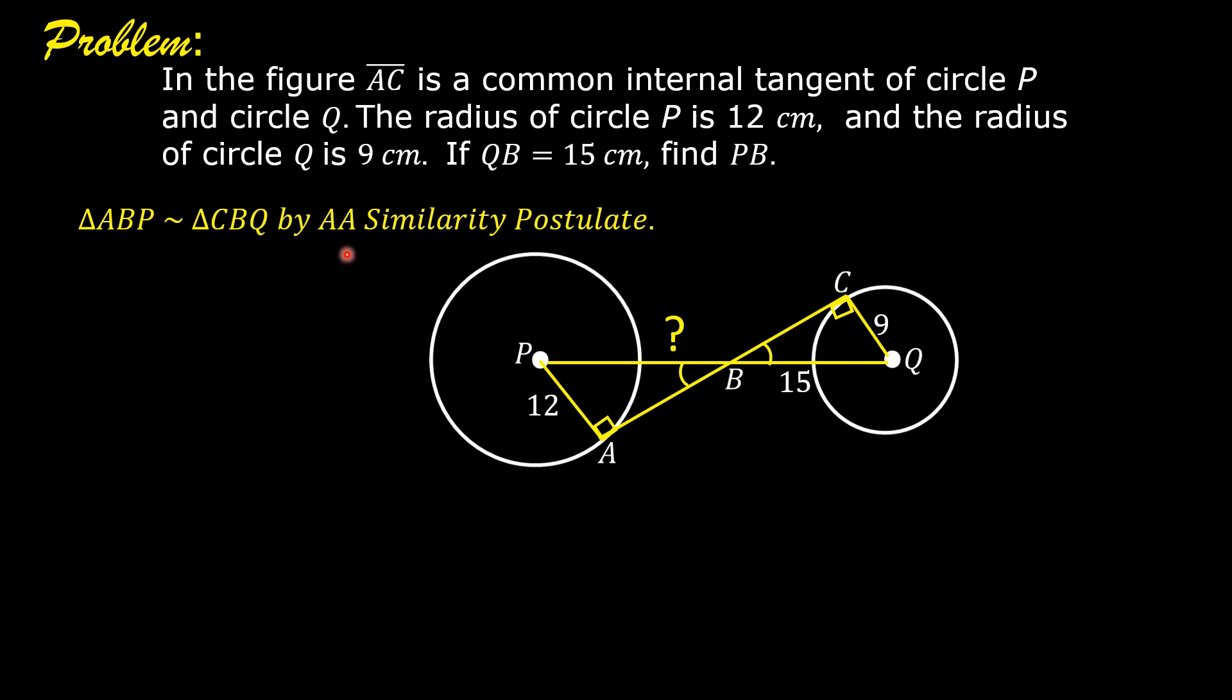AA means angle-angle. We can therefore say that PB over QB is equal to PA over QC. Substitute 15 for QB, and 12 for PA, and 9 for QC.